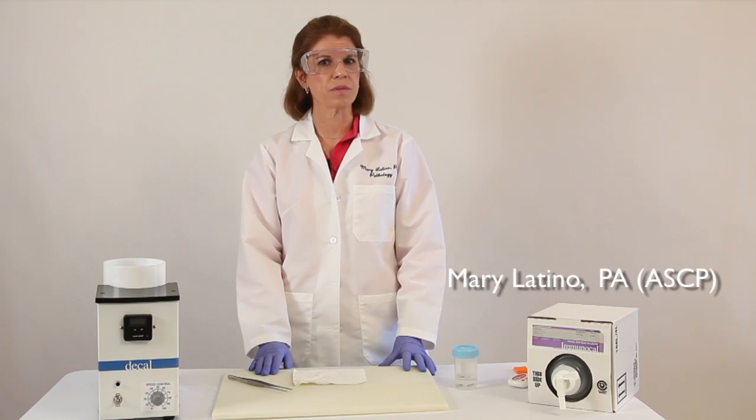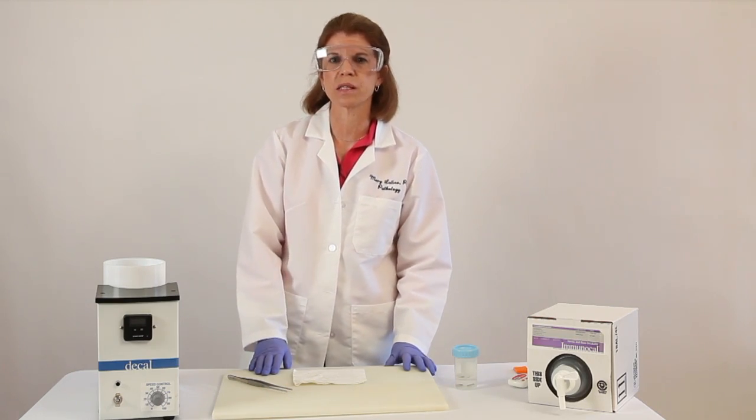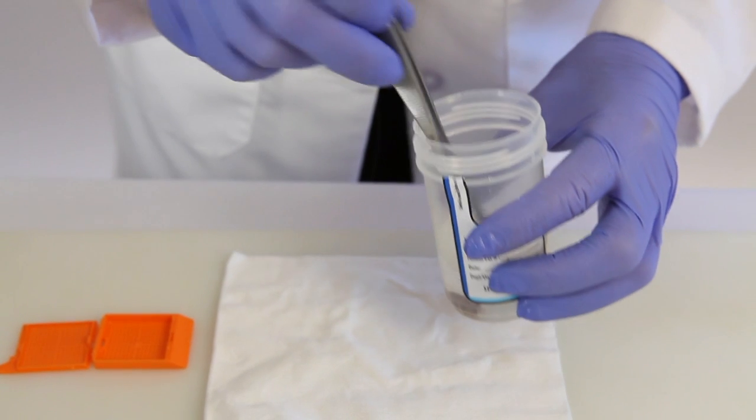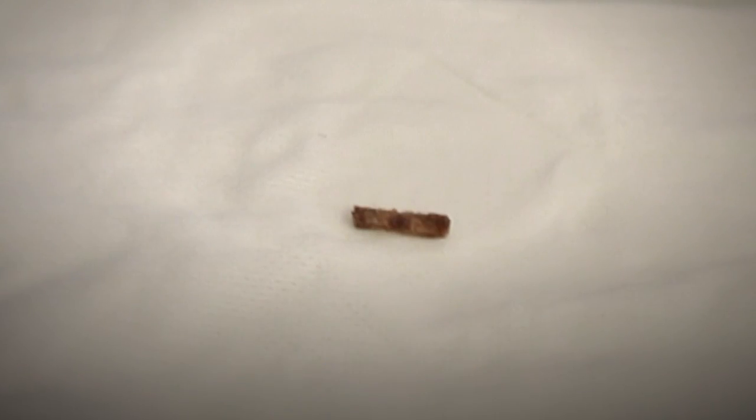I'm Mary Latino here with some tips for decalcifying a bone core specimen. As you can see, they're typically cylindrically shaped like this one because they're taken from a bone marrow using a needle.